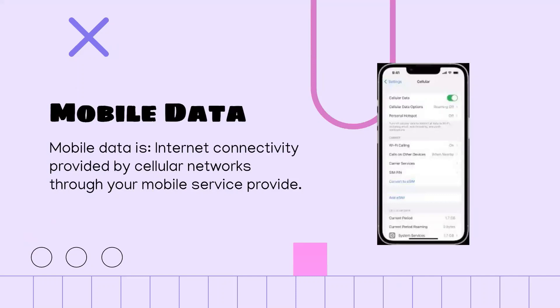Mobile data is similar to Wi-Fi, but instead of your phone connecting to a router, it connects directly to a cell tower through your SIM card.